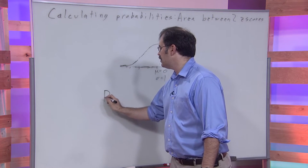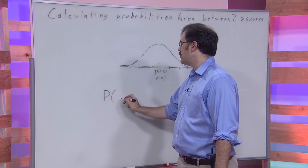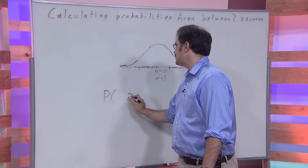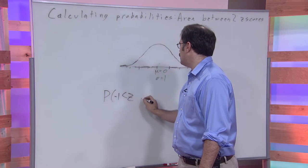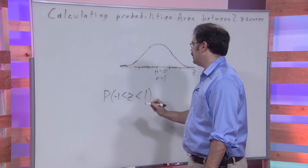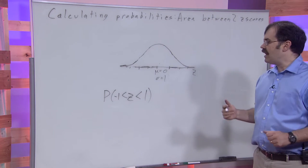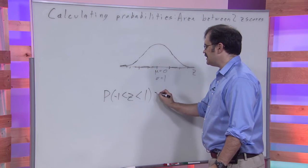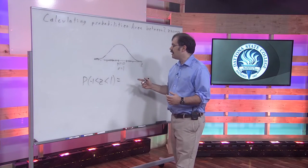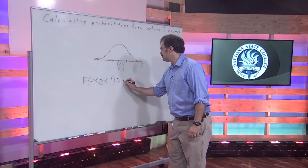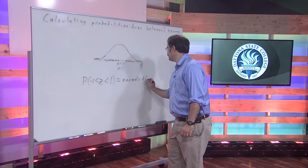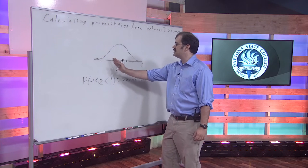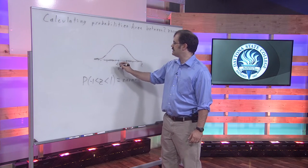The problem's going to look something like this: What's the probability that we have a z-score that is between, say, negative one and one? And the way that we're going to calculate this is exactly the same as what we did before. We are going to use normal CDF, and we're going to describe the interval that we're interested in.